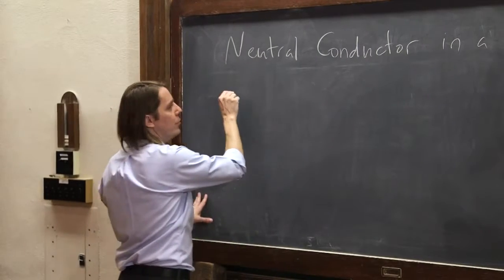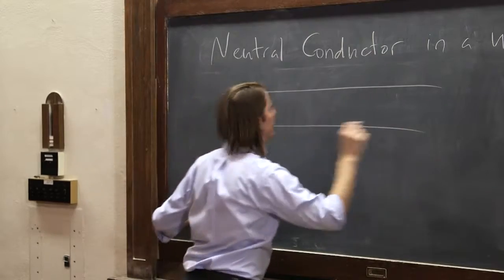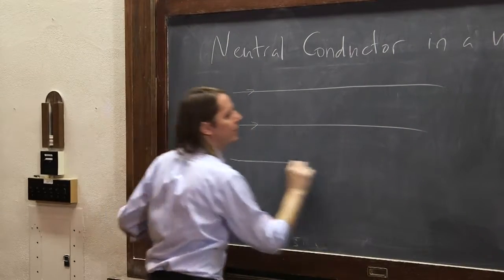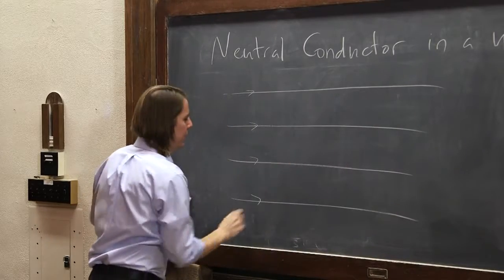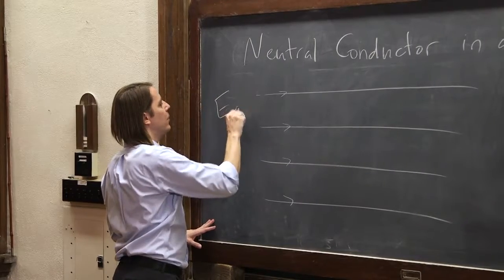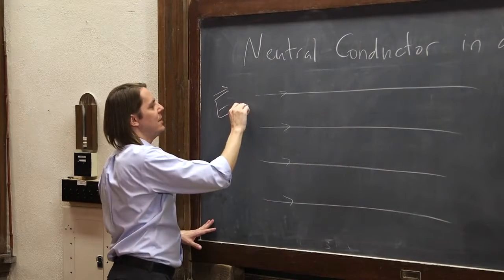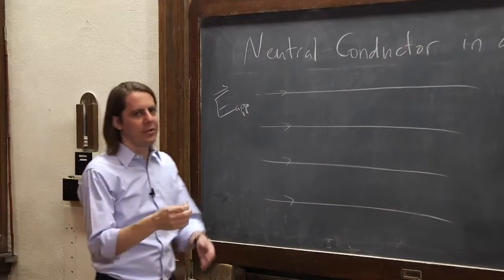So let's start just with our uniform field. I'll draw it this time. It's better to draw it in terms of field lines rather than vectors. So I'll draw field lines for this one, like that. And we're going to apply a uniform field E, let's call it E-APP as a subscript, for E applied. It's a field we've created in space.